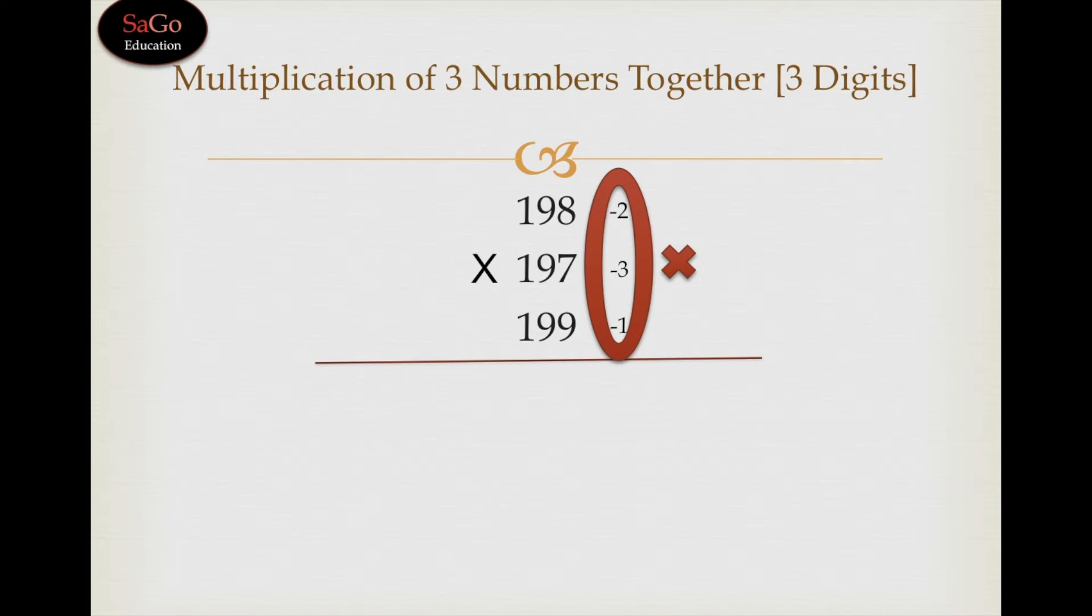As per Vedic maths, we won't write minus 6. We will write 6 bar. Because the base is 200, there are two zeros in the base, and 6 bar is a single digit. So to balance the number, we will put 0 before 6 bar. It has been balanced. Now put a slash and move forward.